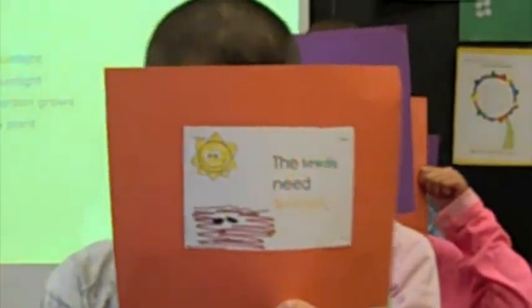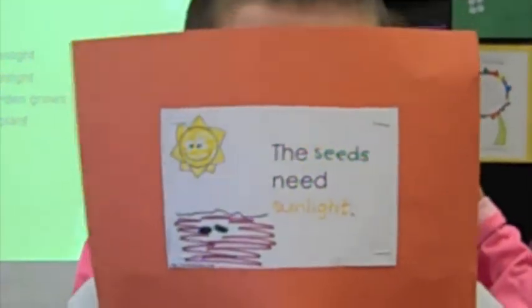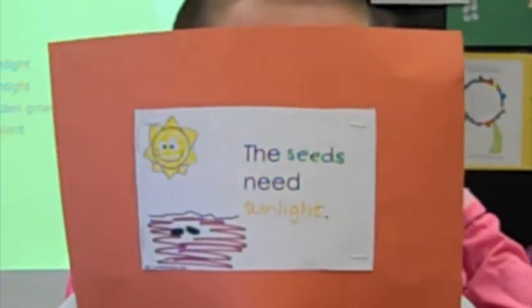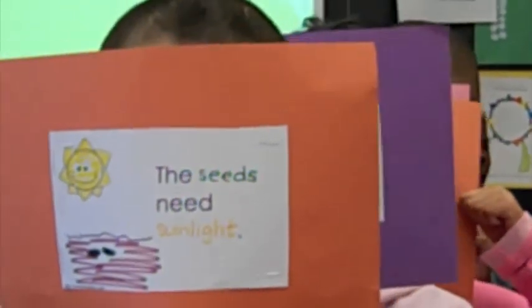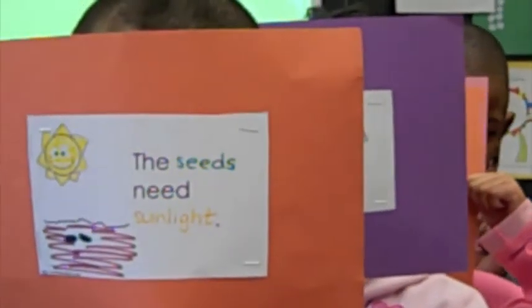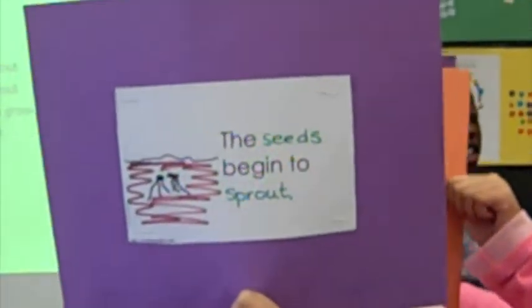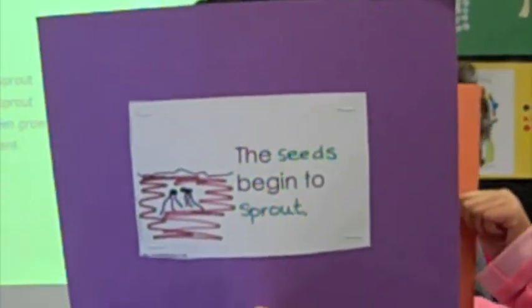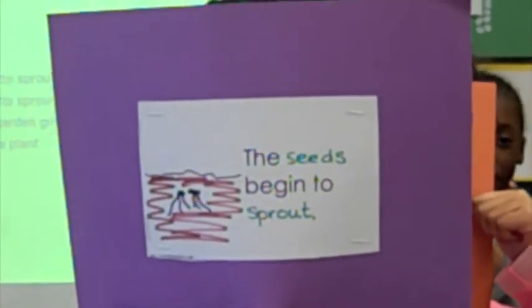The seed needs sunlight, the seed needs sunlight. This is how my garden grows, the life cycle of a plant. The seed begins to sprout, the seed begins to sprout. This is how our garden grows, the life cycle of a plant.